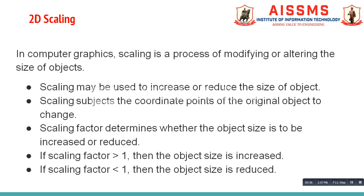Now let us see what is 2D scaling. In computer graphics, scaling is a process of modifying or altering the size of objects. Scaling may be used to increase or reduce the size of an object. Scaling subjects the coordinate points of the original object to change. The scaling factor determines whether the object size is to be increased or reduced. If the scaling factor is greater than 1, the object size is increased. If the scaling factor is less than 1, the object size is reduced.